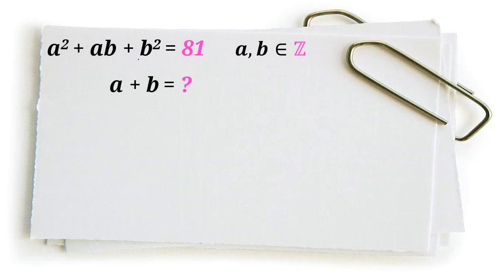We have a squared plus ab plus b squared equals 81, where a and b are integers, and we want to find a plus b. In the first part, one obvious answer is a equals 9, b equals 0 — or a equals 0, b equals 9. So one case gives a plus b equals 9.